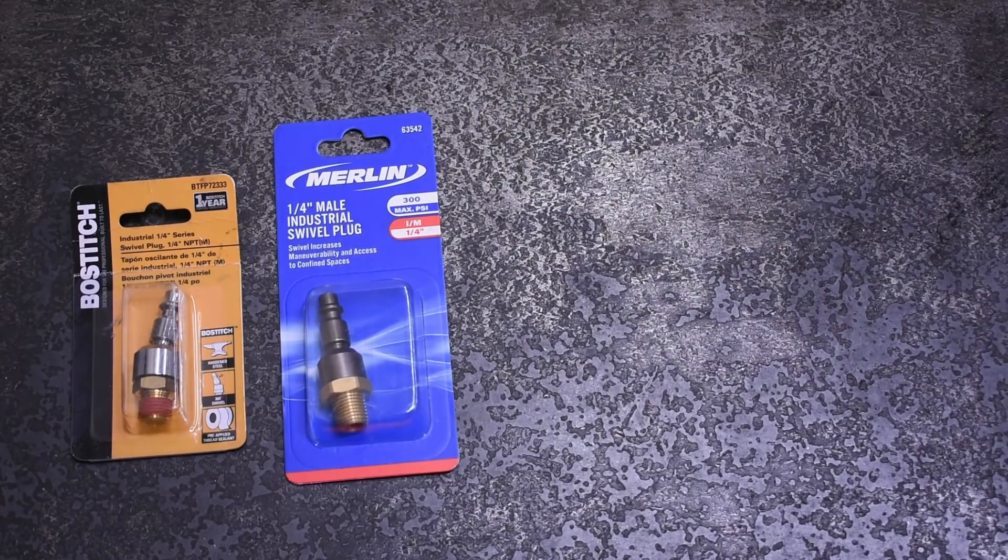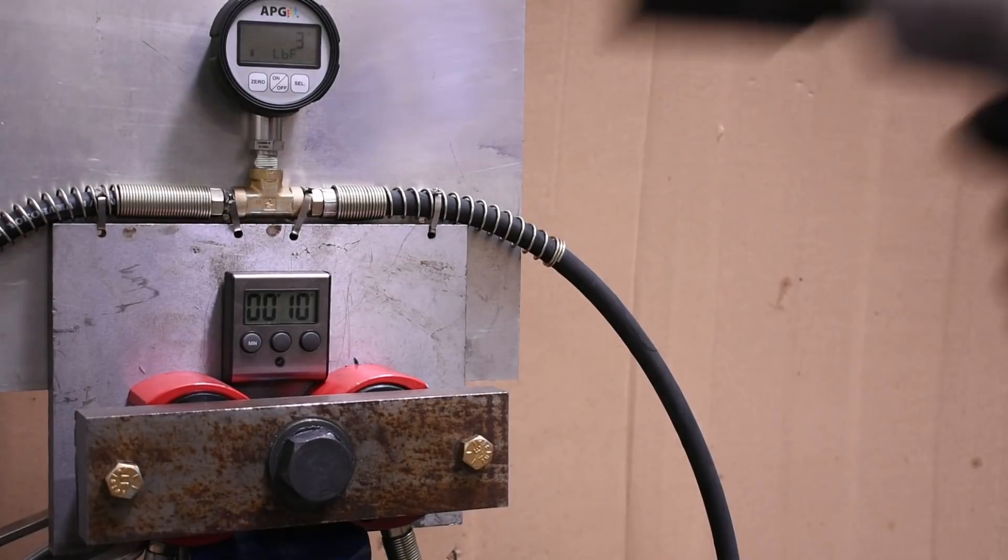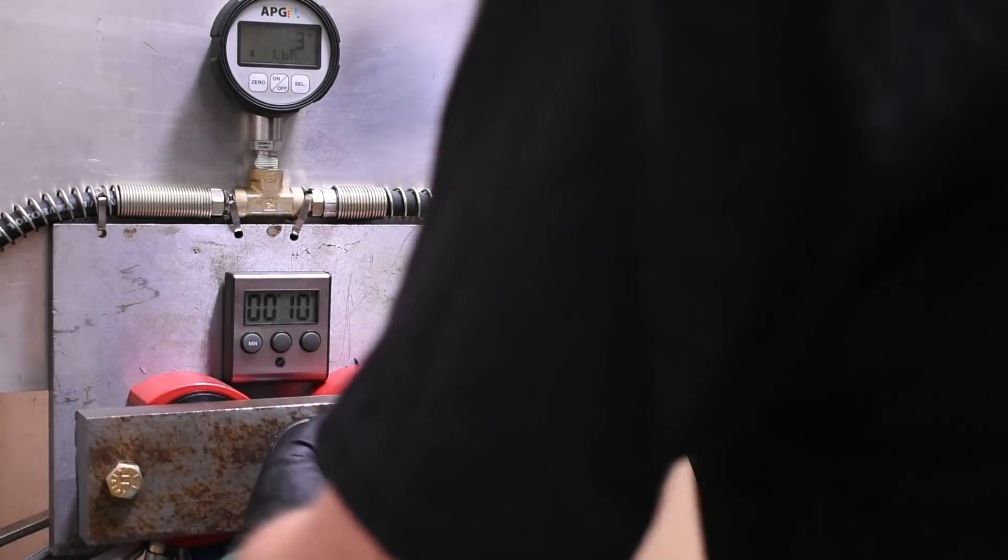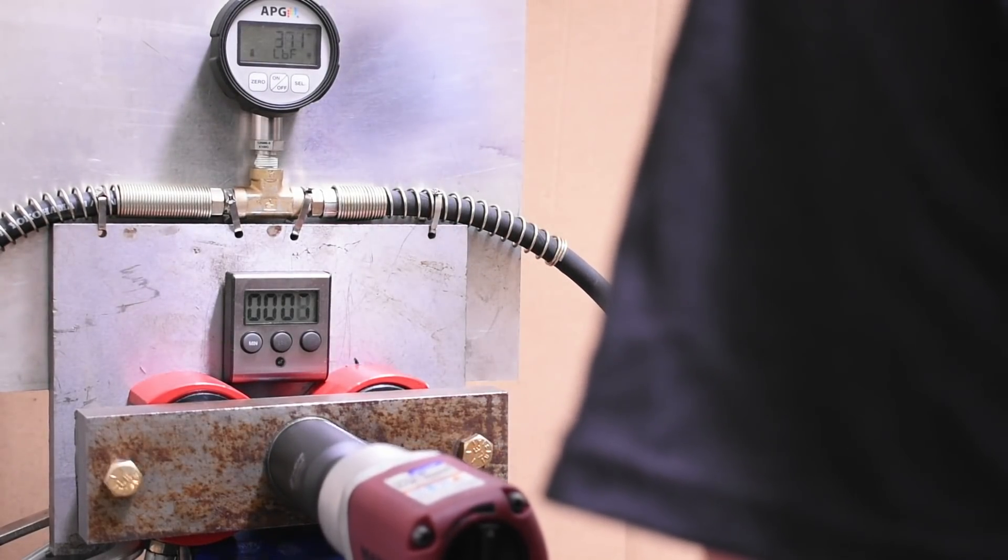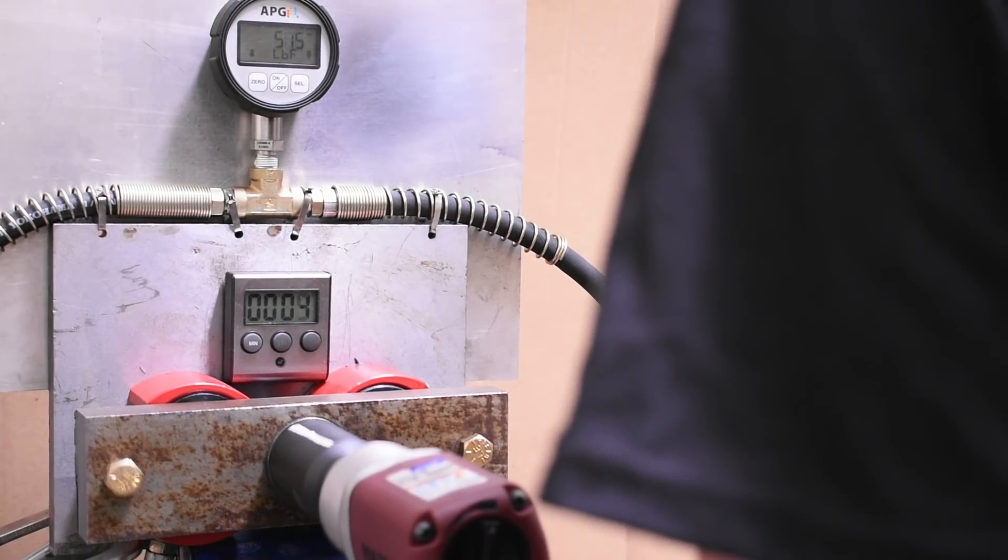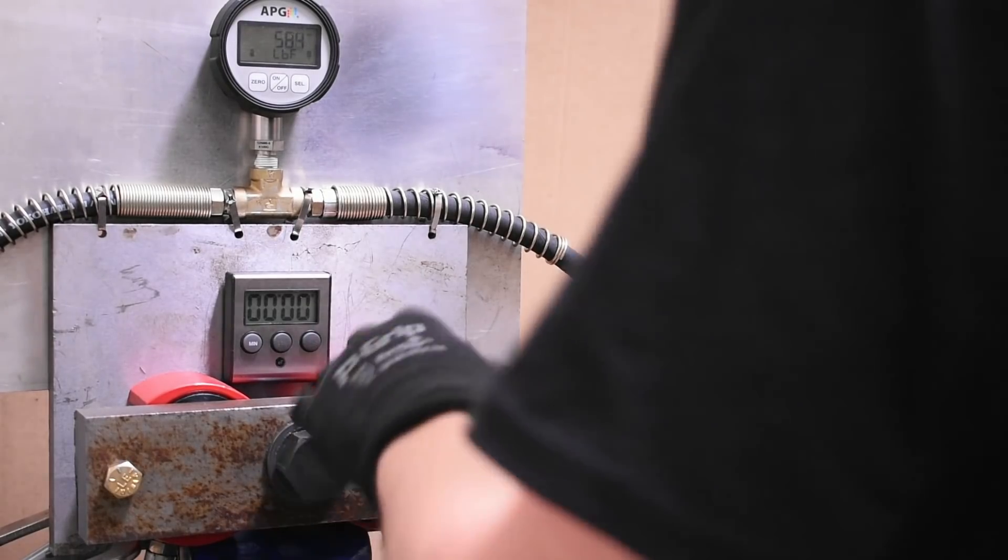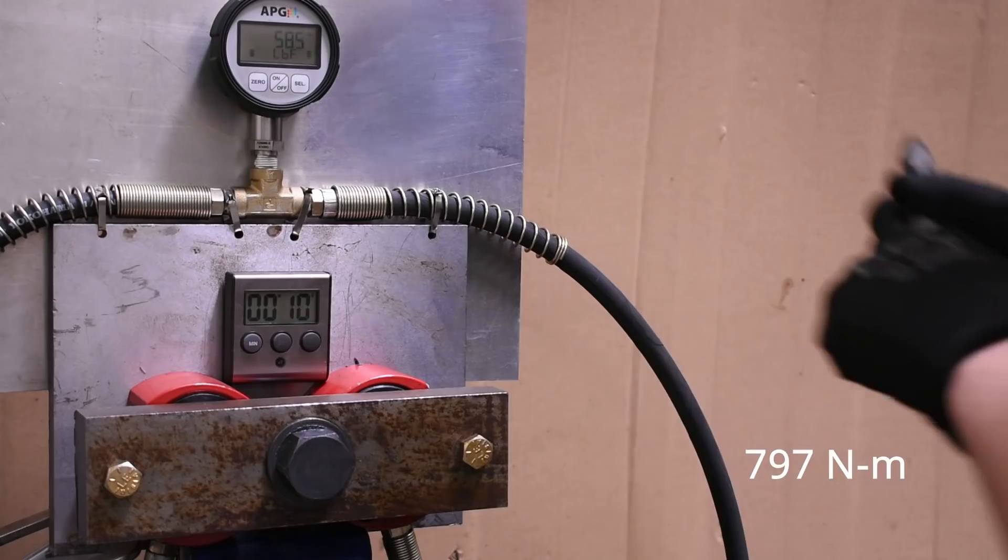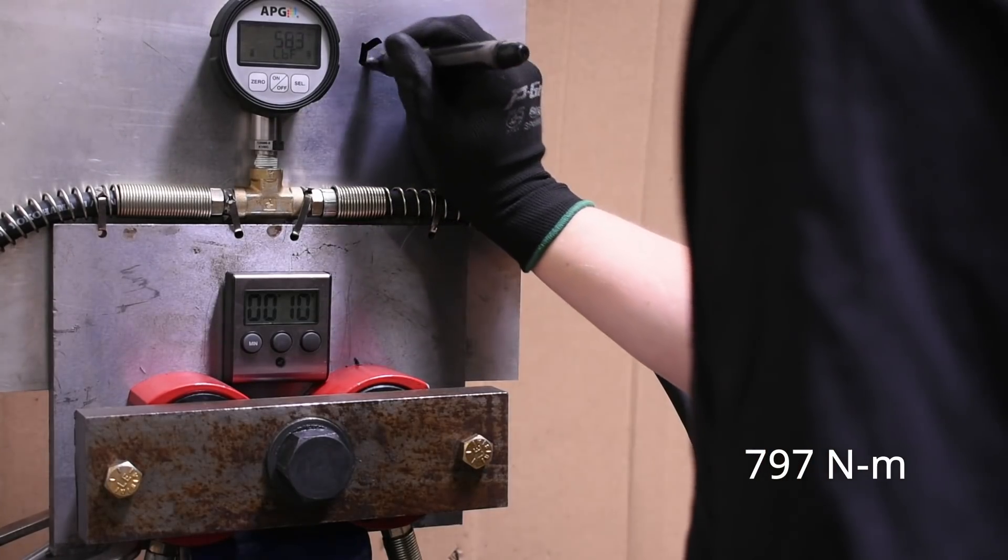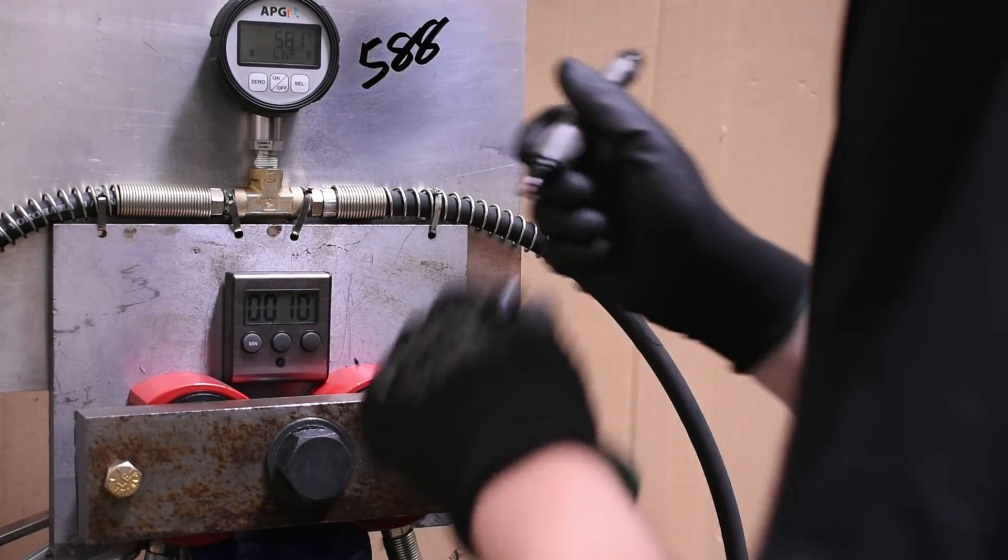Let's get into the testing. First up we have the Matco MT2769 base run for our 10 second max reverse torque run. Around six months ago this model made 594 in this test. Let's see how she's doing after well over 50 tests on this dyno. That's 588, not too shabby. When testing these air swivels our offhand will be holding them at their max angle to use them as they were sort of designed for.